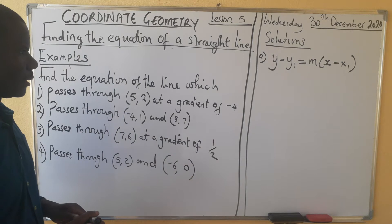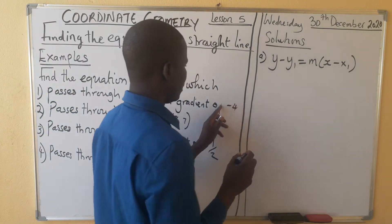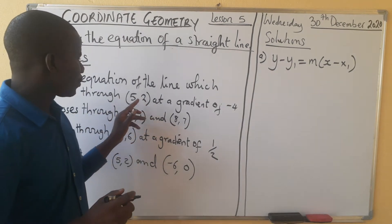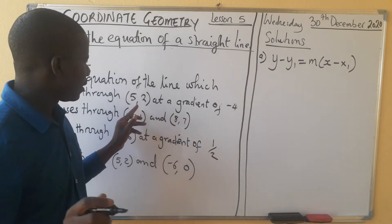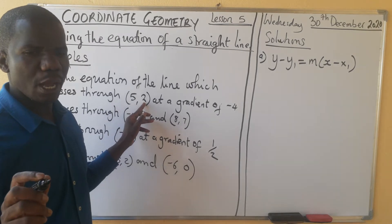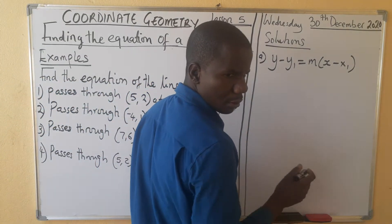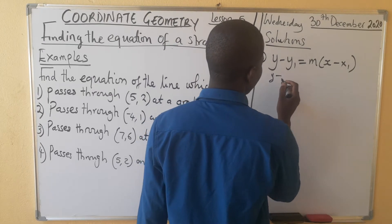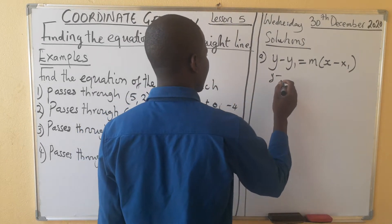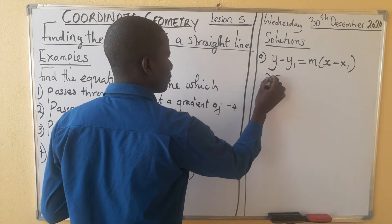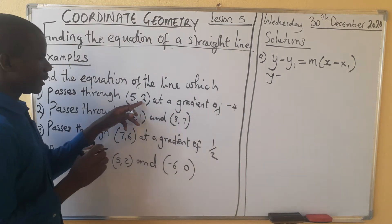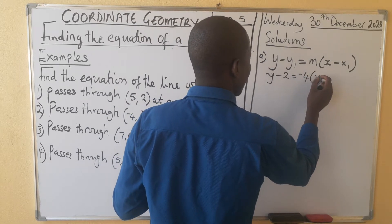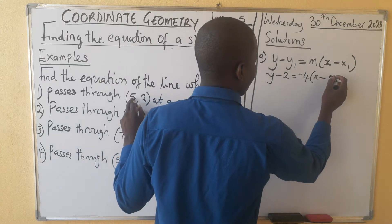The gradient is negative four. The point has two coordinates: the x-coordinate, which we treat as x1, and the y-coordinate, which we treat as y1. We can now begin to replace. y minus y1 — the y-coordinate here is two — equals negative four times x minus the x-coordinate, which is five.